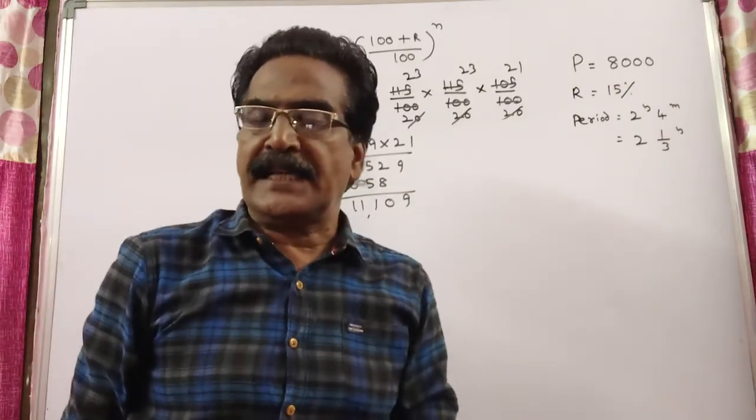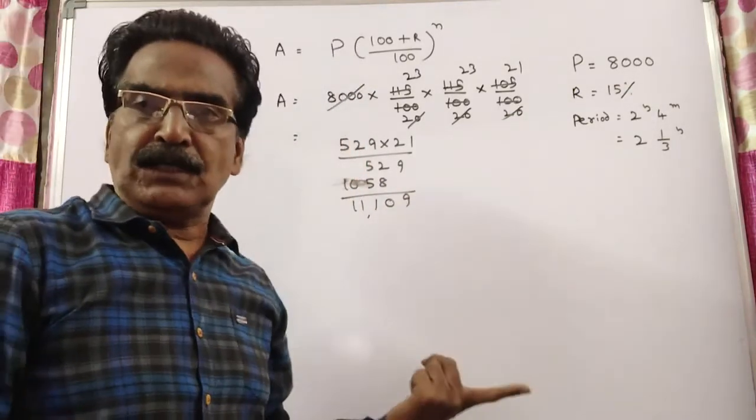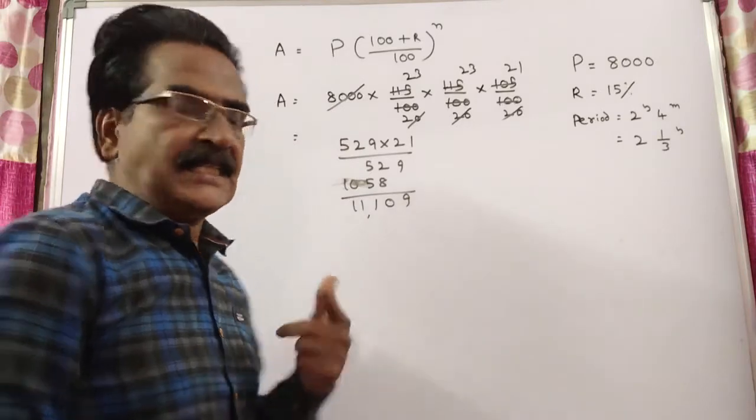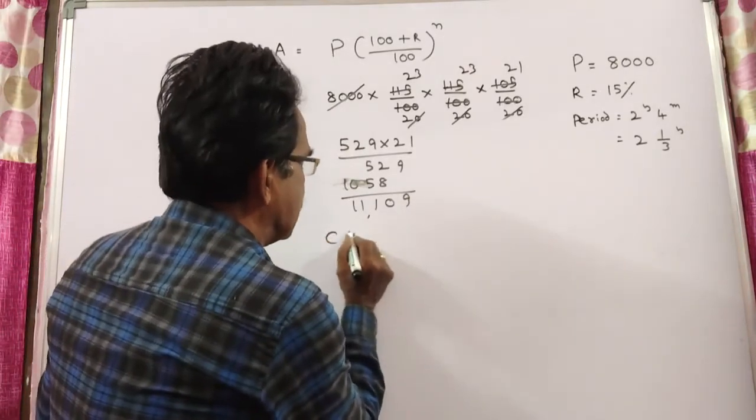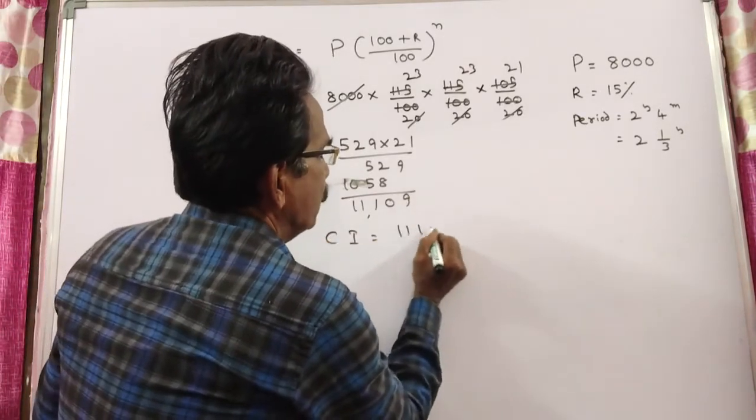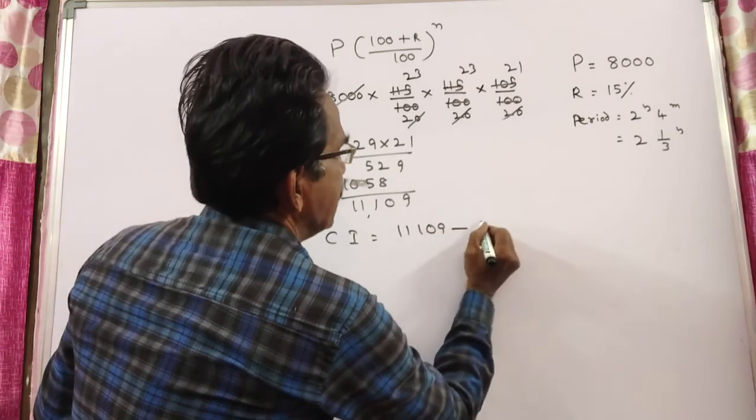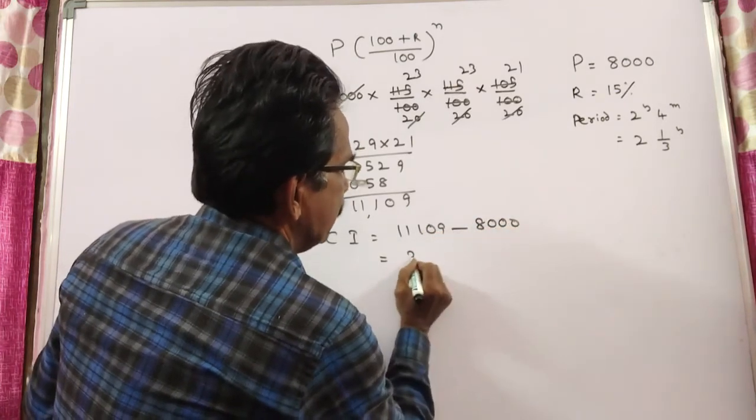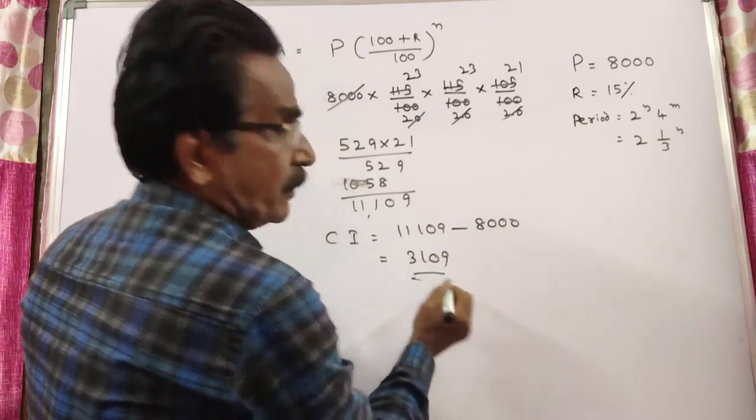11,109 is the compound amount. We want compound interest. So, compound interest is equal to 11,109 minus 8000. So, your answer is 3,109.